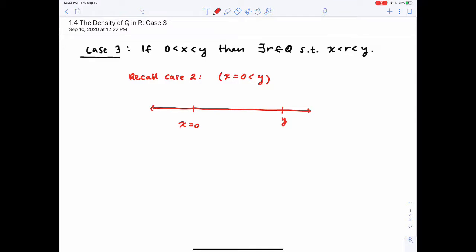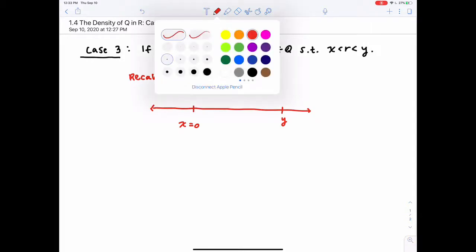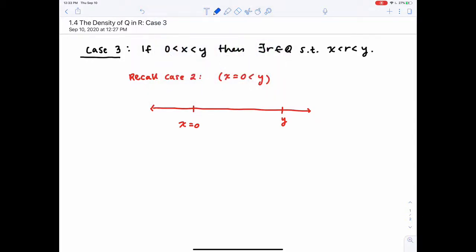Recall in case 2, that's the case where x is 0 and y is a positive number. You should have discussed with your group that this is really just the Archimedean property part 2. The Archimedean property part 2 says there has to exist a little n such that 0 is less than 1 over n, which is less than y.